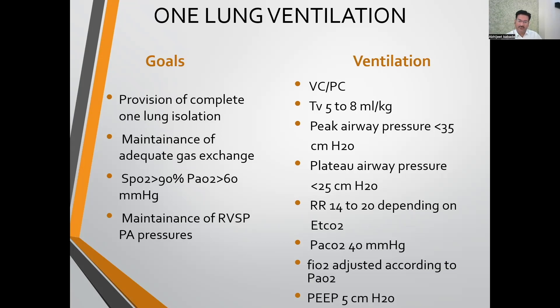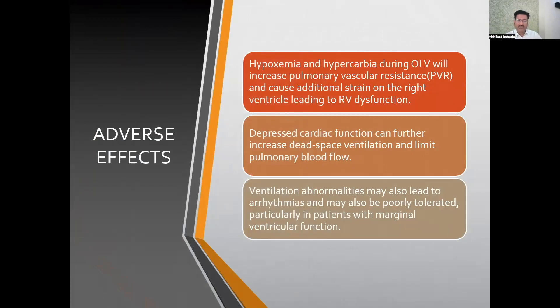FiO2 should initially be set to 1.0, then decreased according to PO2 levels. Adverse effects of one lung ventilation in CABG include hypoxemia and hypercarbia, which increase pulmonary vascular resistance and cause additional strain on the RV, leading to RV dysfunction — which is as disastrous as LV dysfunction. Depressed cardiac output further increases dead space ventilation and limits pulmonary blood flow. Most CABG patients already have depressed cardiac output.